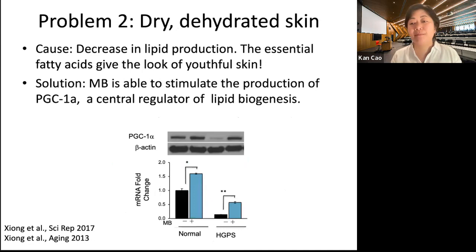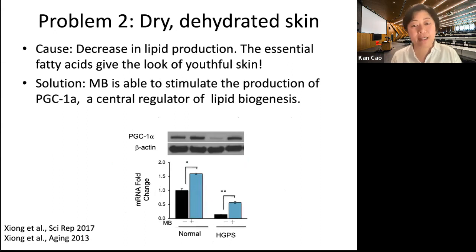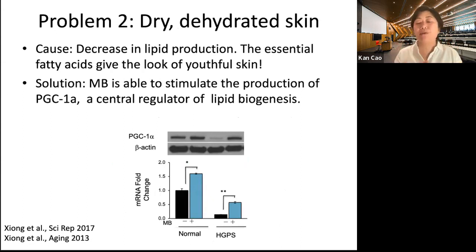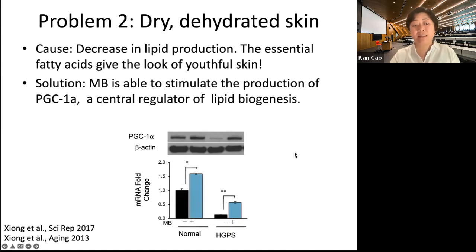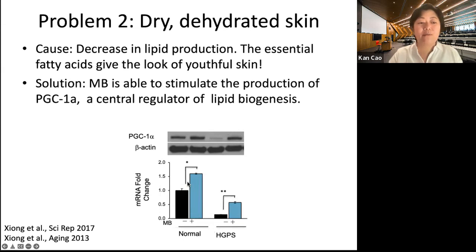The second common problem with aged skin is dry and dehydrated skin, caused by a decrease of lipid production. Lipids are the essential fatty acids that give us the glowing look of our skin. We found that methylene blue is able to stimulate the production of PGC1-alpha, a central regulator for lipid biogenesis. After methylene blue treatment in both normal and progeria cases, we see a significant upregulation of PGC1-alpha.